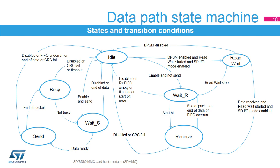In busy state, the DPSM waits for the CRC status flag. If it receives a positive CRC status, it moves to wait S state if the SDMMC D0 pin is not low, meaning the card is not busy. From wait S state, a new packet transmission can start, or the DPSM can return to idle state when all data is transmitted. A negative CRC status from the card or a FIFO underrun error can force the DPSM to return to idle state. For data reception, the DPSM moves from idle to wait R state. When a start bit is detected on the bus, the DPSM moves to receive state and remains until a full packet is received. If an error or the end of data transfer flag is detected, the DPSM will return to idle state.